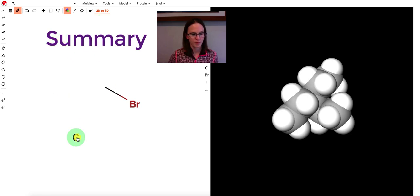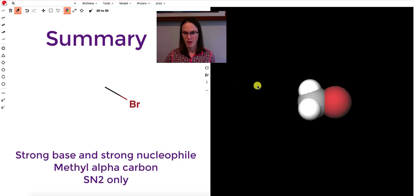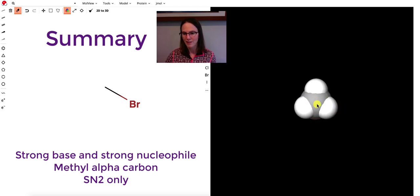So just to review, when that alpha carbon is methyl, E2 is not even possible. There is no beta carbon, so there's no protons, and very easy to access that alpha carbon.